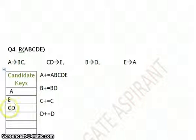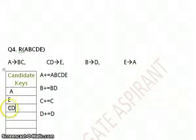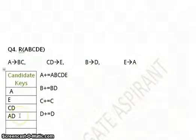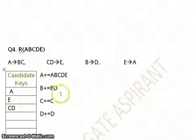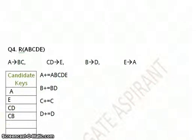Similarly, I search for C on the RHS. I find it here, so I can replace C by A. This gives AD. But again, applying the minimality check: A is already a candidate key, so AD is not minimal. We cannot include this. Now I search for D on the RHS. I find B. So I replace D by B, giving CB.